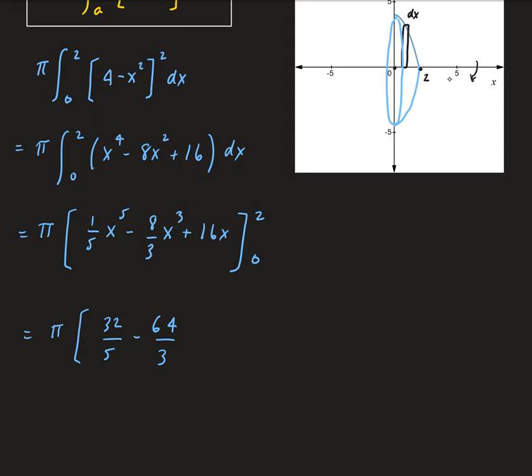And 16 times 2, that will give us 32. And if we plug in 0, that's just going to give us 0.